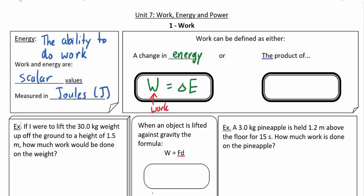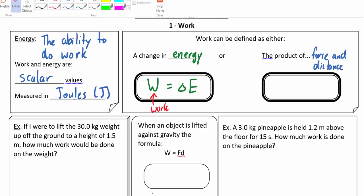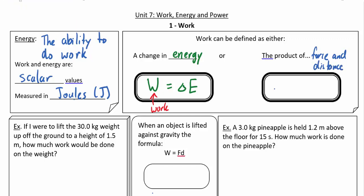You can imagine stomping on the gas pedal of a car to make it start moving — the engine is doing work on the car, using energy, and the car is gaining that energy as it moves along. We can also think of work as the product of force and distance. You'll see this formula on your formula sheet: work equals force times distance.